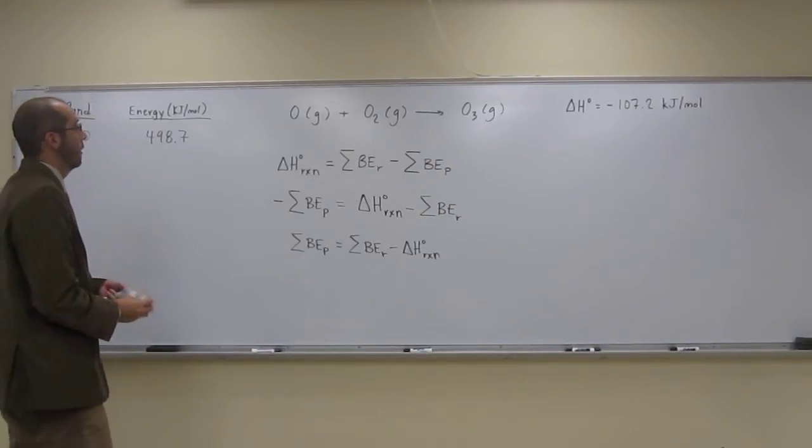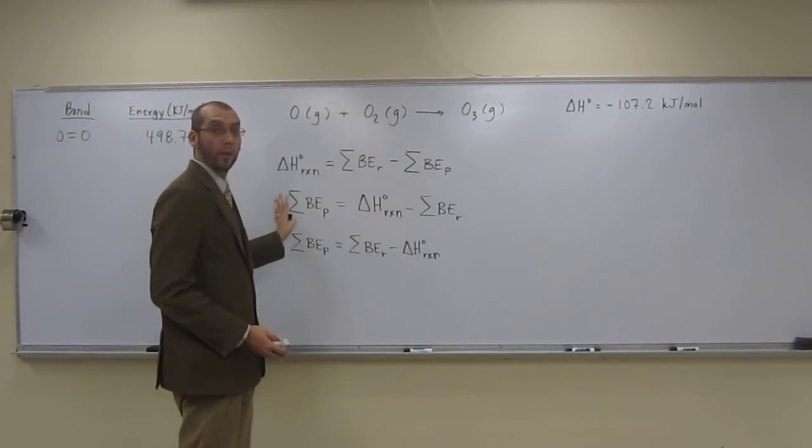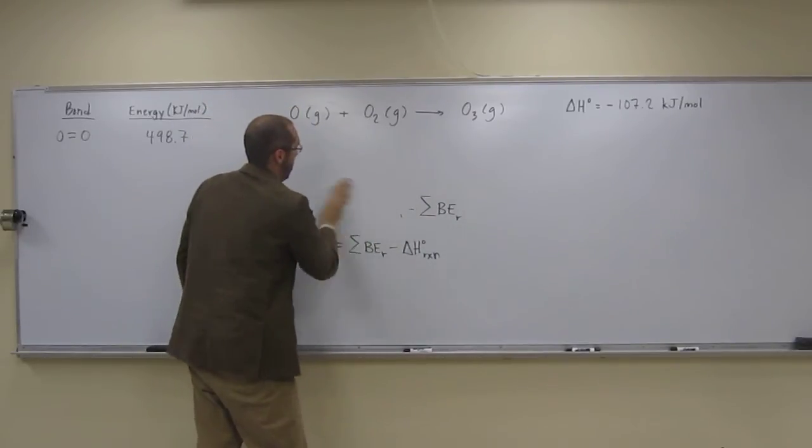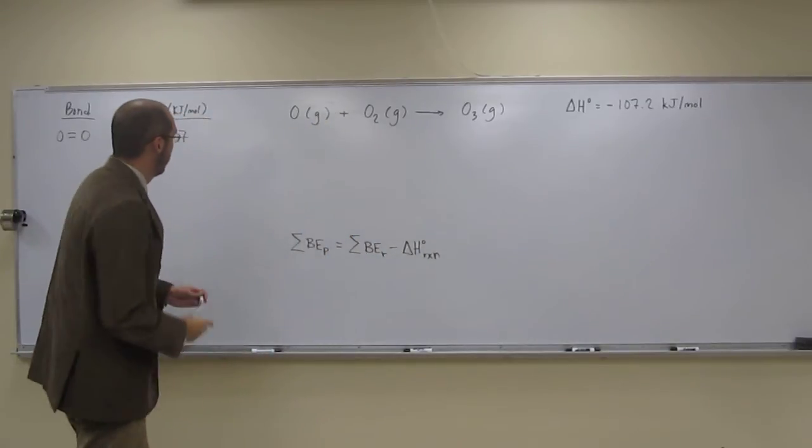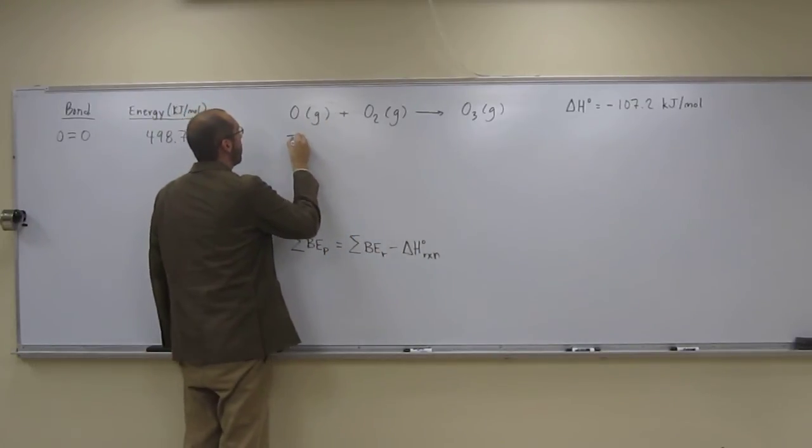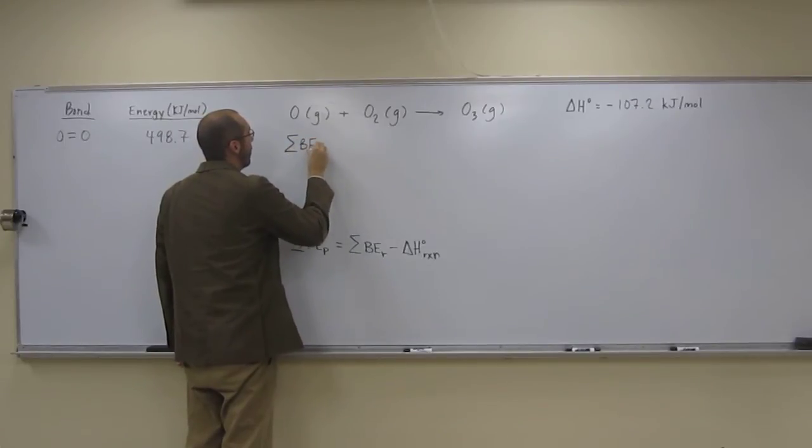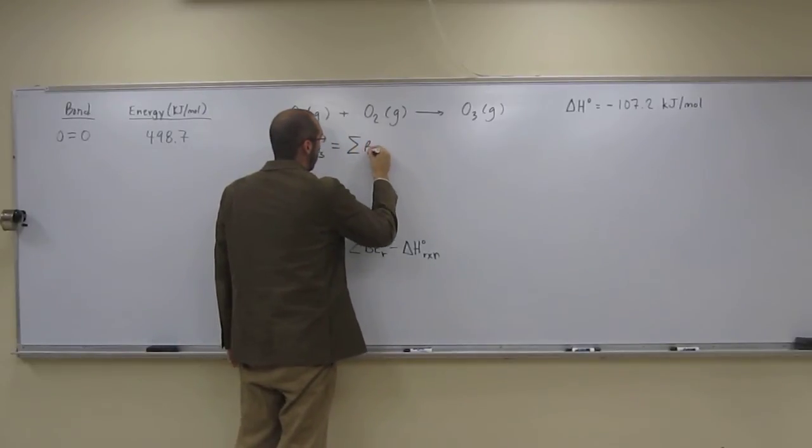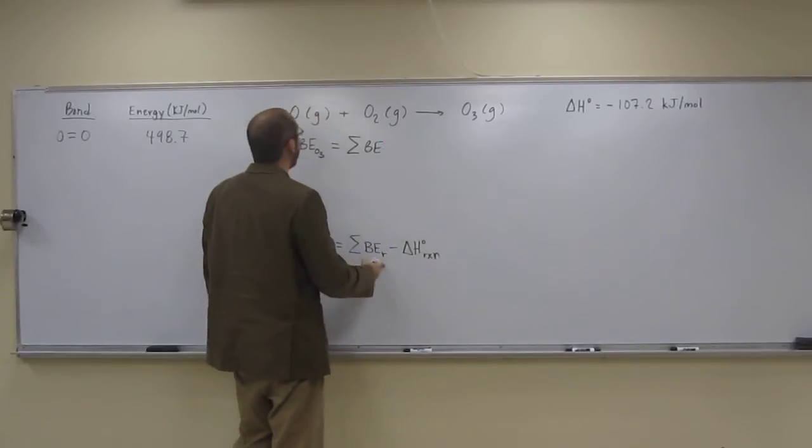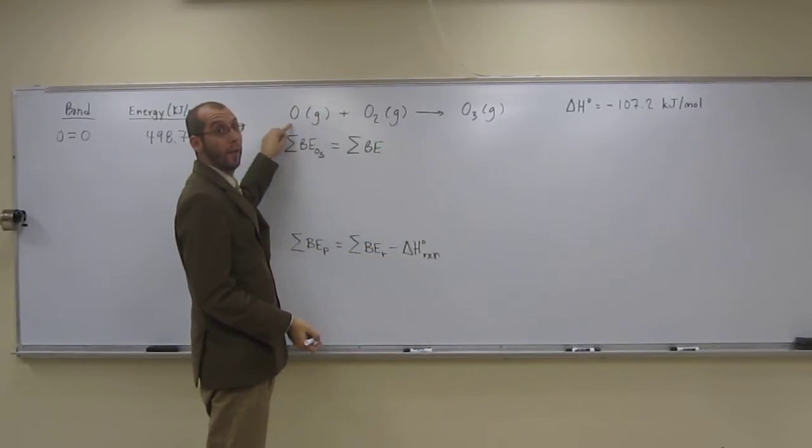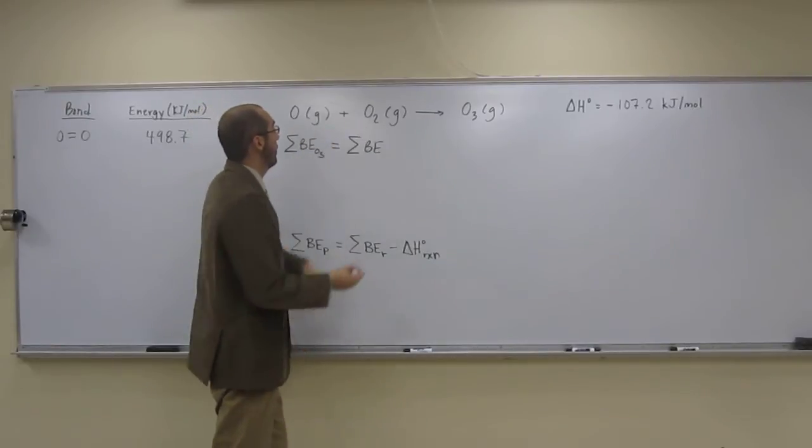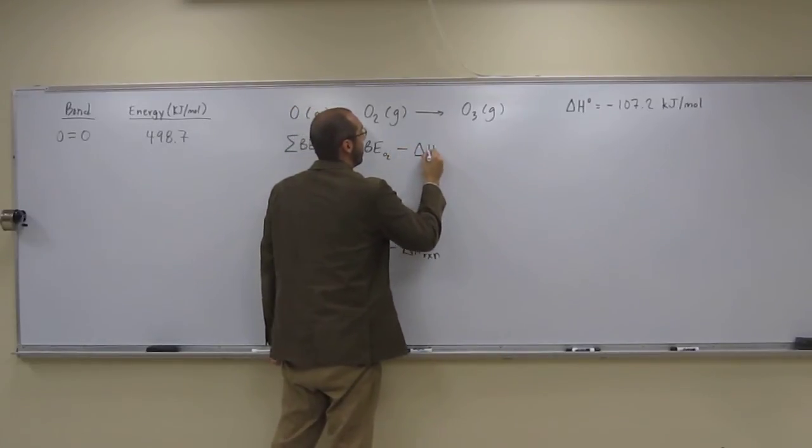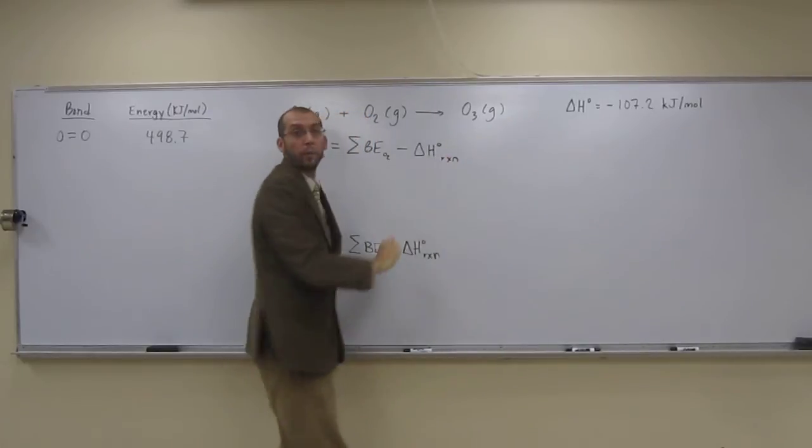So I'm going to erase this portion and we'll just redo this equation, and we'll plug and chug. In other words, the sum of the bond energies of O3 equals the sum of the bond energies of the reactants. But this reactant doesn't have any bonds in it, so this is the only reactant that has bonds, minus the delta H of the reaction, which we've got up there.